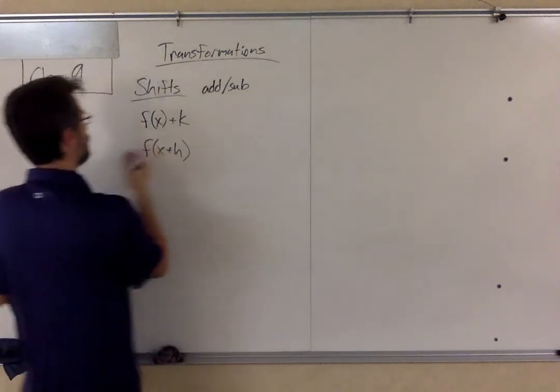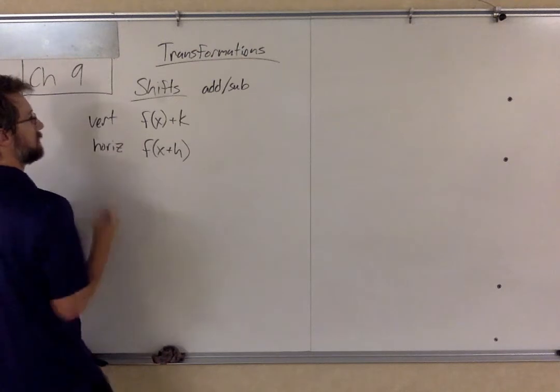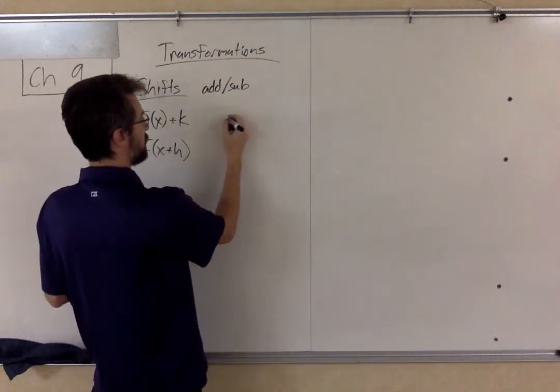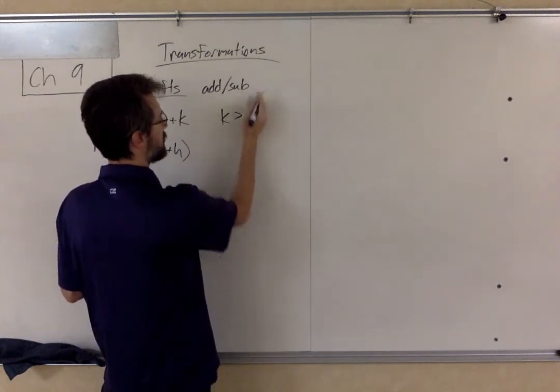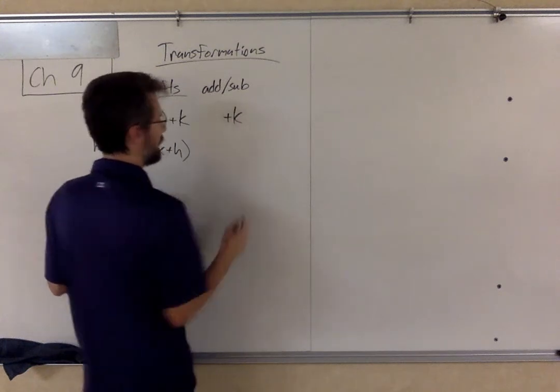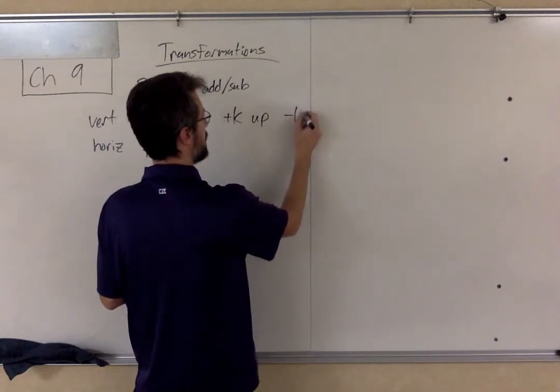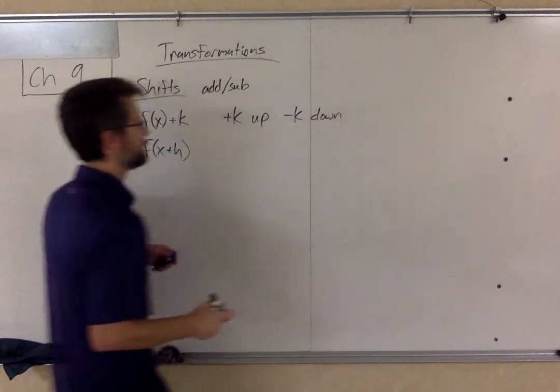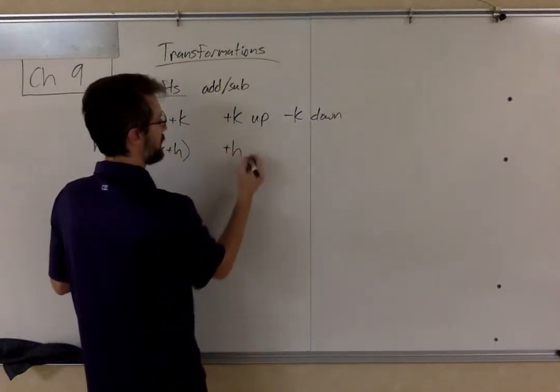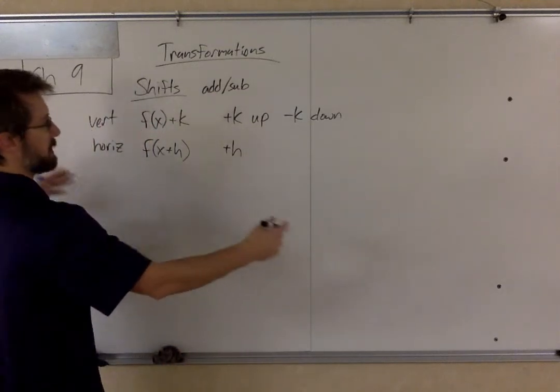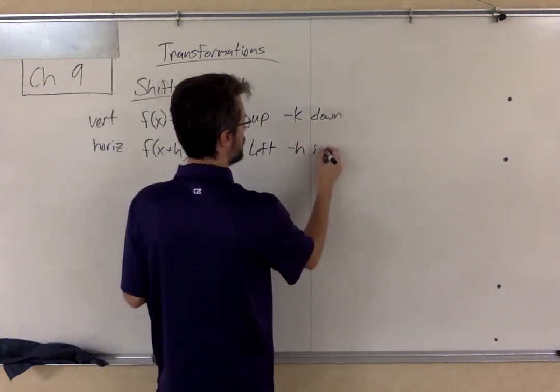If we're adding on the outside, so that's our vertical shift, this is our horizontal, our rules are as follows. If it's plus K, so I guess if K is greater than zero, then this is shifting up, and if it's minus K, this is shifting down. With our horizontal, things are a little bit goofy because if we're adding H, now we are shifting. You would think it's shifting to the right, but it's actually shifting to the left. And if we're subtracting H, it is shifting to the right.